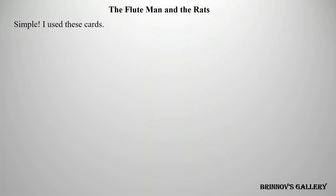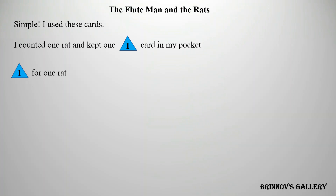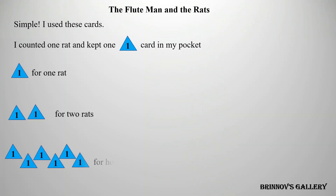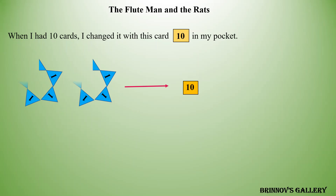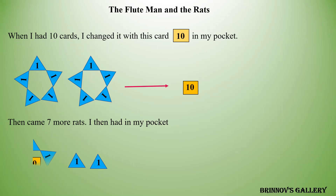Simple. I used these cards. I counted 1 rat and kept 1 card in my pocket. For 2 rats, for 6 rats. When I had 10 cards, I changed it with one card in my pocket. Then came 7 more rats. I then had cards for 17 rats.